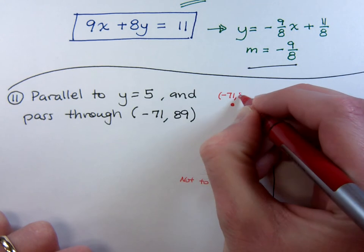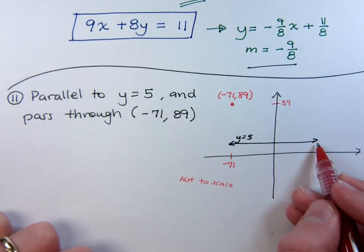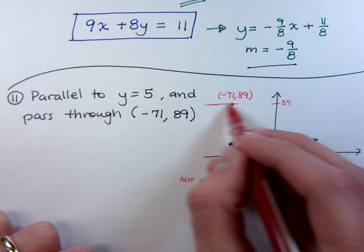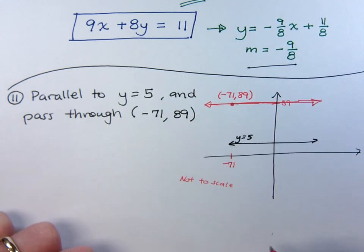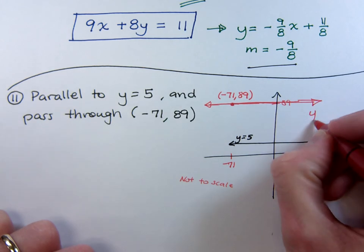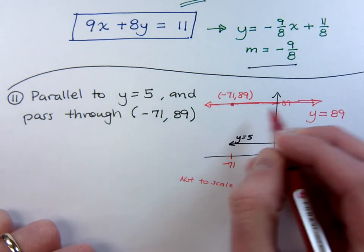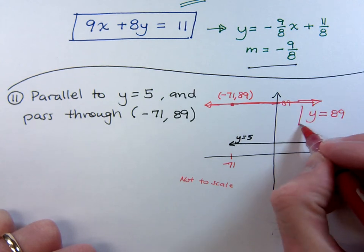Negative 71, 89. If you want to be parallel to a horizontal line going through this point, then you will need to be a horizontal line going through that point. And remember that every horizontal line is of the form y equals. So, in this case, what does y equal? Well, y has to equal 89 in order to be this horizontal line. So, there is the answer to this problem.